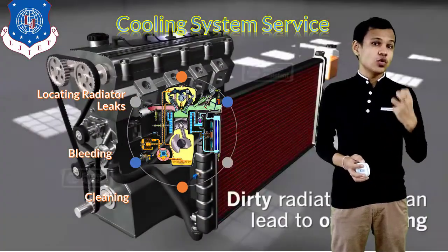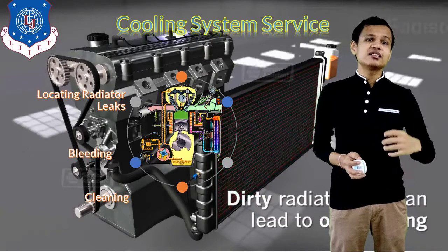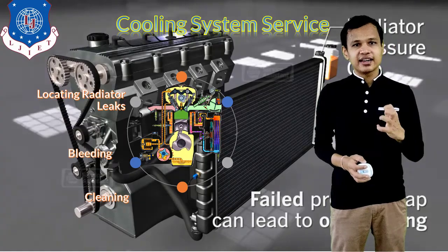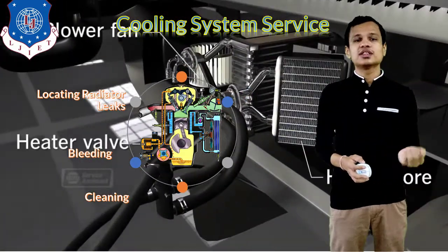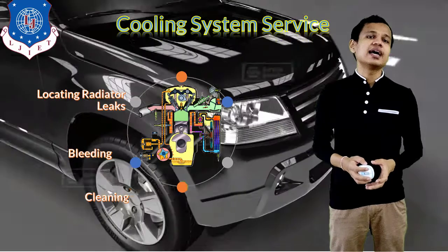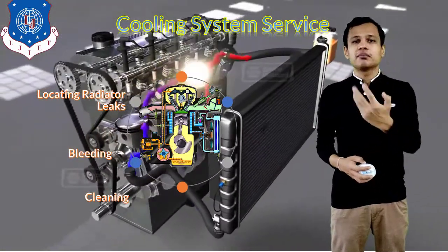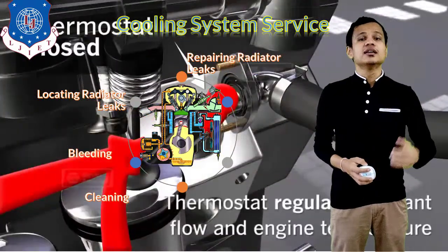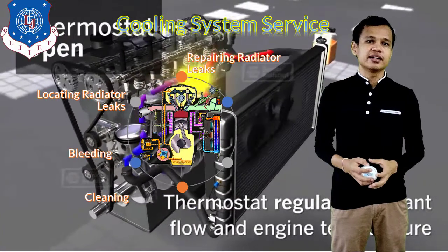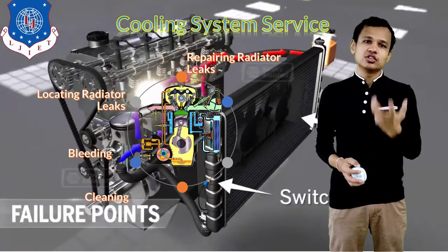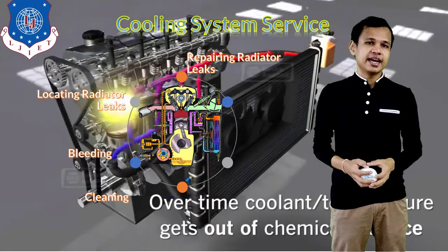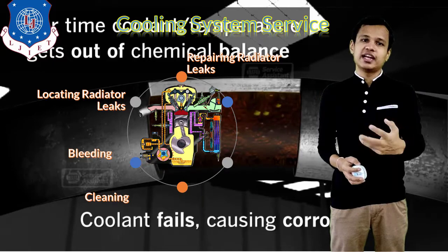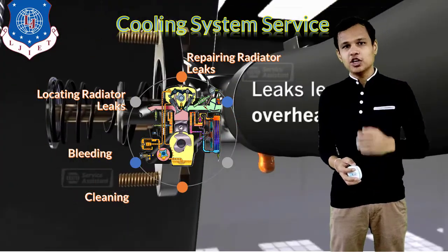Next is locating the radiator leaks. If there is a loss of pressure in the cooling system, there are chances that there are leaks in the radiator. Leaks will be located using the soap bubble method or any other suitable method. After locating the leaks, repair needs to be done on those leaks and they should be kept airtight so that the leaks are eliminated and the required pressure can be obtained.